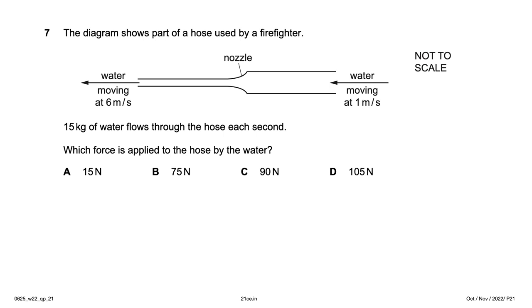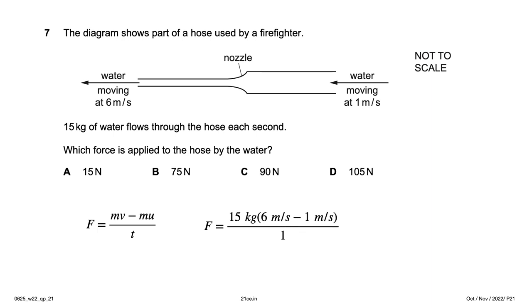The diagram shows part of a hose used by a firefighter; 15 kg of water flows through the hose each second. Which force is applied to the hose by the water? This is a change-in-momentum question: force = change in momentum / time = m(v − u). The mass is 15 kg, it enters at 1 m/s and leaves at 6 m/s, giving a force of 75 newtons — option B.